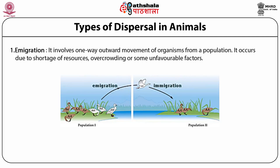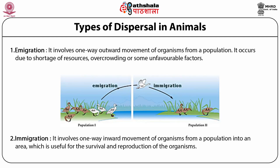Many individuals in human populations leave their place in search of better job opportunities and other resources and do not return to their original place. Immigration involves one-way inward movement of organisms from a population into an area which is useful for the survival and reproduction of the organisms. For example, the bird which moves away from the original population and enters a new population is called immigration. People leaving India for better job prospects and living conditions in the USA is an example where people are emigrating from India and immigrating to the USA.